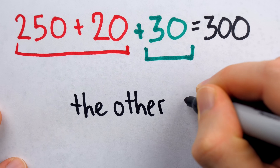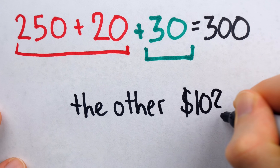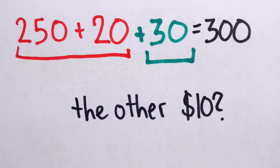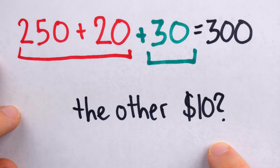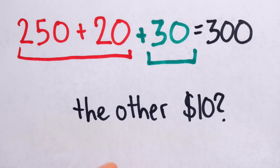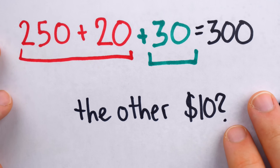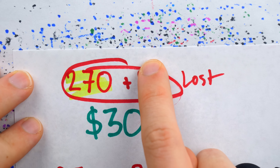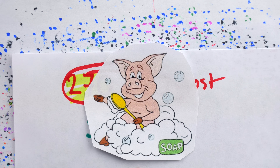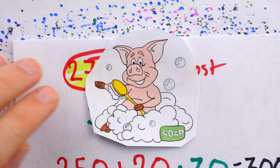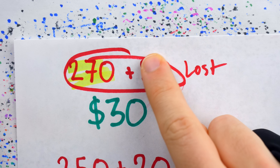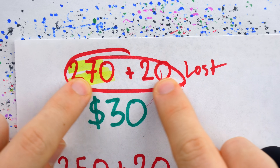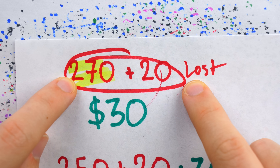Asking what happened to the other $10 trips a lot of people up, because you expect, if you think about it, you'll find that $10 somewhere in your own accounting of the situation. But you won't, because the addition of $270 and $20 is a hogwash move. The $270 that the girls paid includes the $20 the attendant kept, so to add them is clearly an error.